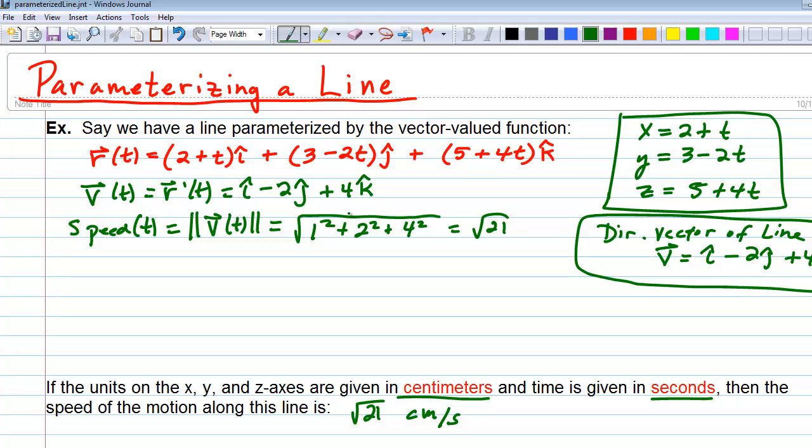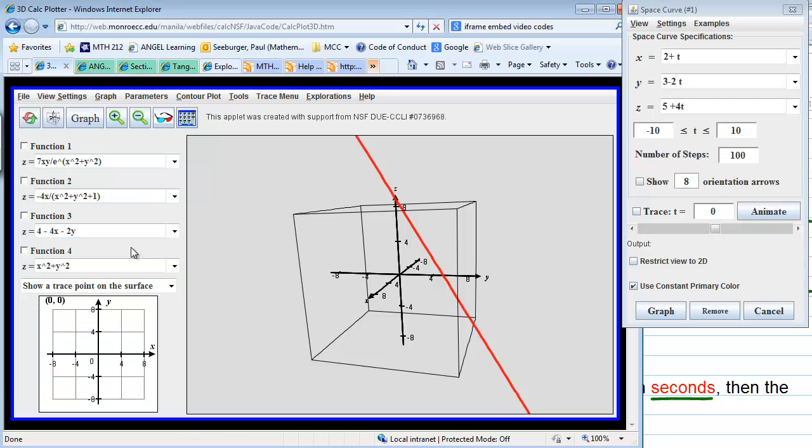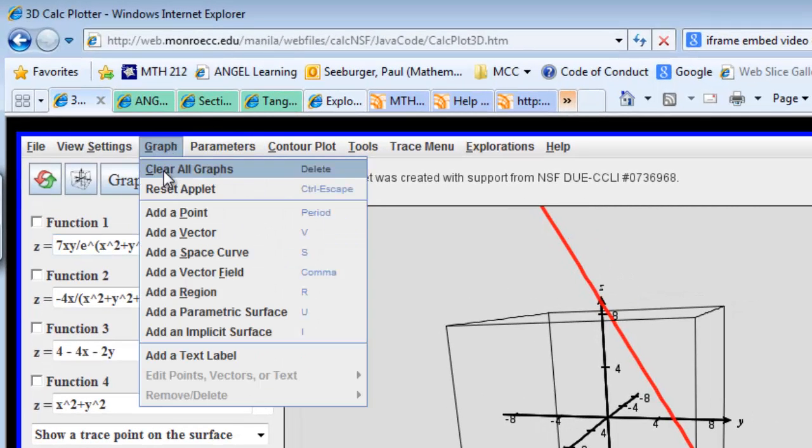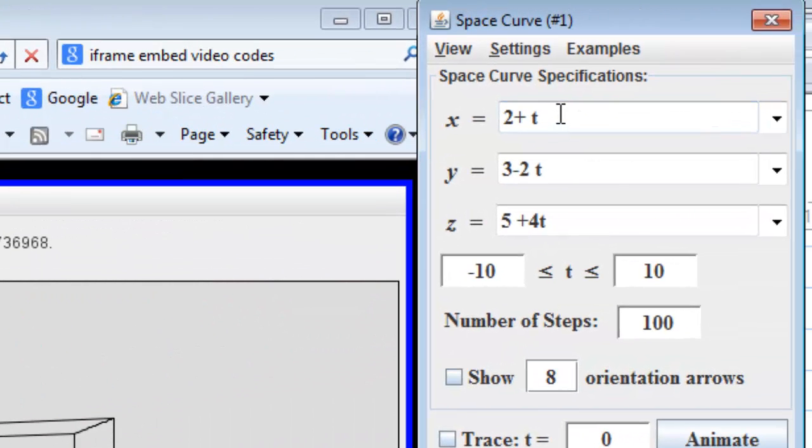What I want to look at next is actually the applet, so let's go jump to the applet here. So now, when we're in the applet, I've already entered this in the space curve, but of course to get to a space curve, you can hit the graph menu, and then go down to add a space curve, as we see right here. So once we're in there, we can see we put 2 plus t for our first component, 3 minus 2t for our y component, and the z equals 5 plus 4t, going from negative 10 to 10 is fine here. We've got 100 steps, we don't really need that many, but that will be fine.